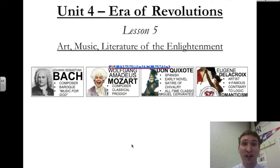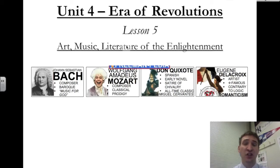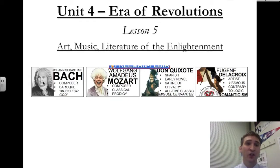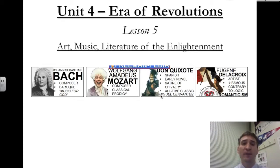Today we're going to end our study of Unit 4, The Era of Revolutions. Lesson 5, the last lesson of this unit, talks about the art, music, and literature of the Enlightenment. We're going to be zeroing in on four major people and four major works of art: the music of Johann Sebastian Bach, the music of Wolfgang Amadeus Mozart, the first modern novel Don Quixote written by Miguel Cervantes, and an art piece by French painter Eugène Delacroix called Lady Liberty Leading the People.